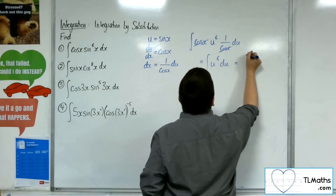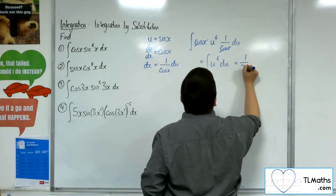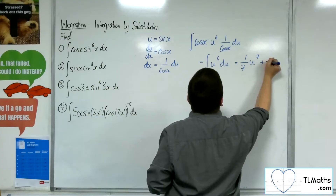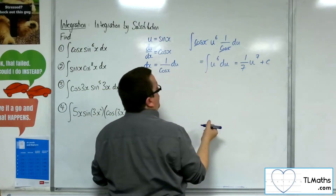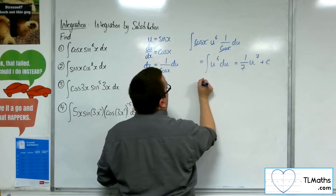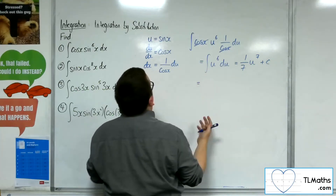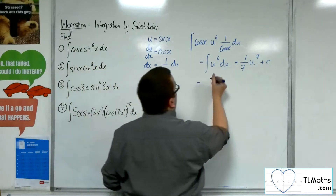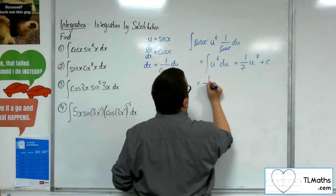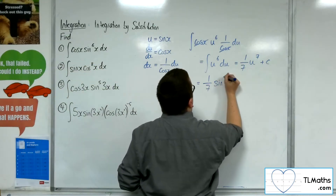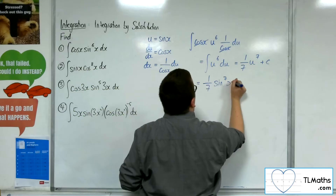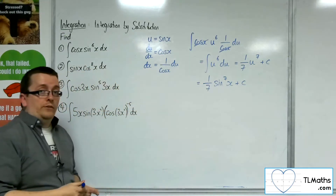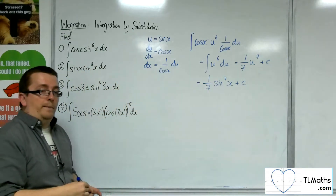Then you can add 1 to the power, divide by the new power, add the constant of integration. And then we can put our substitution back in, which was sine x. So 1 seventh sine to the 7x plus c. And that is our answer for number one.